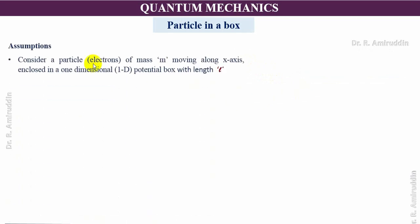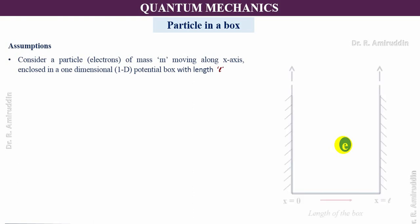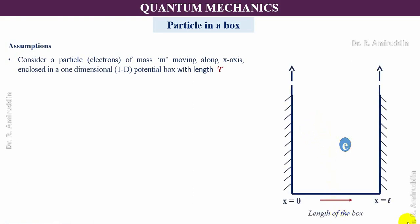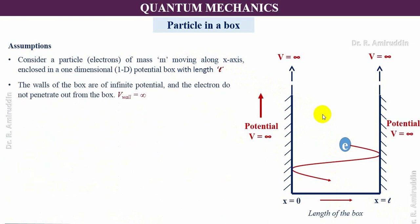To begin with, let us assume a particle — that is an electron of mass M — which is enclosed in a one-dimensional potential box with length L. We will take an electron and assume that it has been confined in a one-dimensional box of length L. This electron will be freely moving along the x-axis. The walls of the box are of infinite potential and the electrons do not penetrate outside the box. So this electron is confined within the box — this is the assumption.